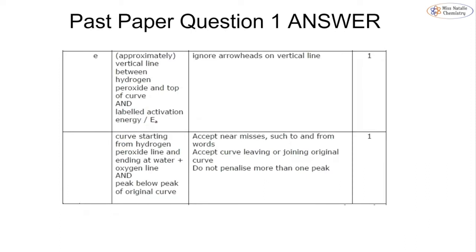Looking at the mark scheme: the first mark for part one is a vertical line between the top of the hydrogen peroxide level and the top of the curve, labeled as activation energy — ignoring any arrows. For part two, the curve must start and end at the reactants and products, and the peak of the curve must be below the original curve.